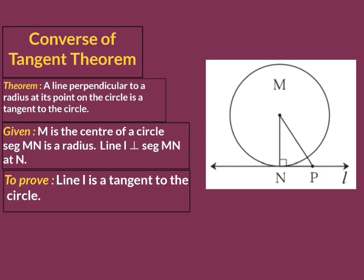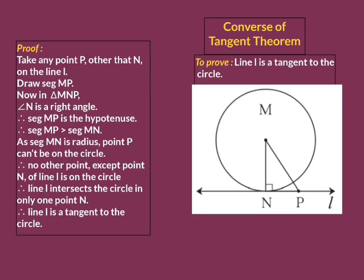Now we'll move towards the proof. We have to prove line L is tangent to the circle. We know the definition of tangent: a line which intersects a circle in one and only one point is said to be tangent to that circle. So we have to show that line L intersects this circle in one and only one point.